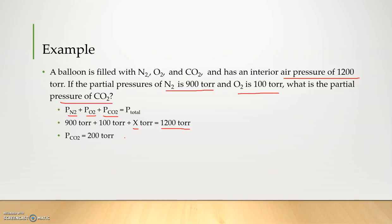One of the nice things about this equation is, as we learned, we have many different units for pressure. As long as our units are consistent — so all torr, all torr, and all torr — we can use this equation with any pressure unit. What's important is that it's the same unit throughout. So if we had 100 torr for oxygen and something in atm for nitrogen, we'd have to convert to one or the other so that we had all torr or all atm.